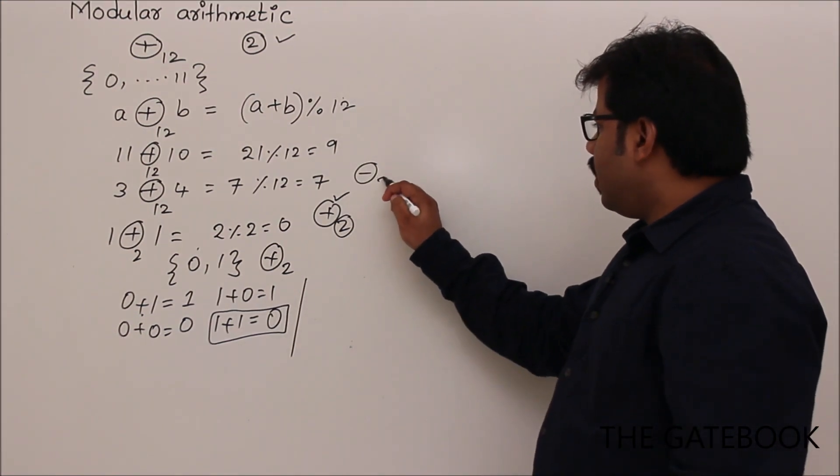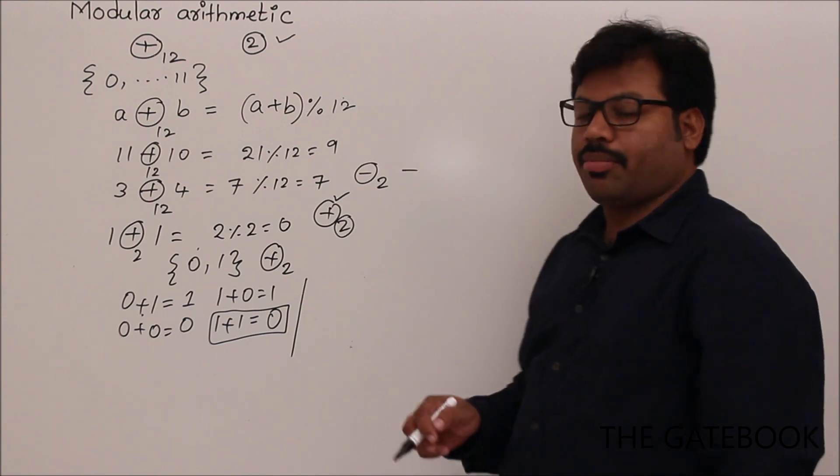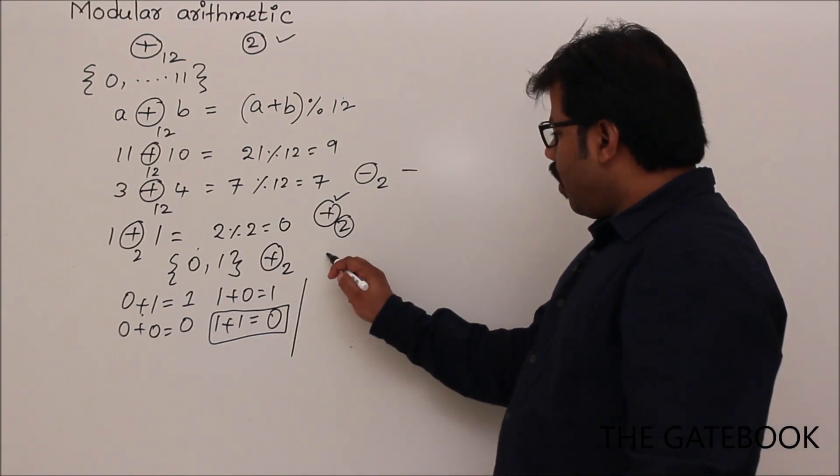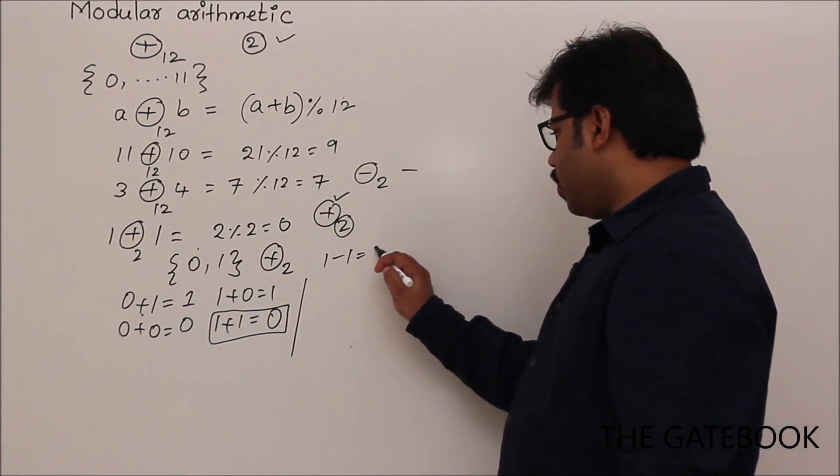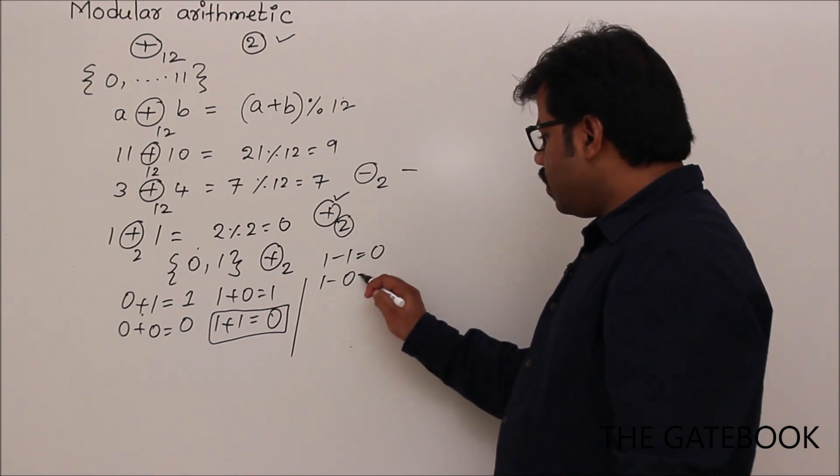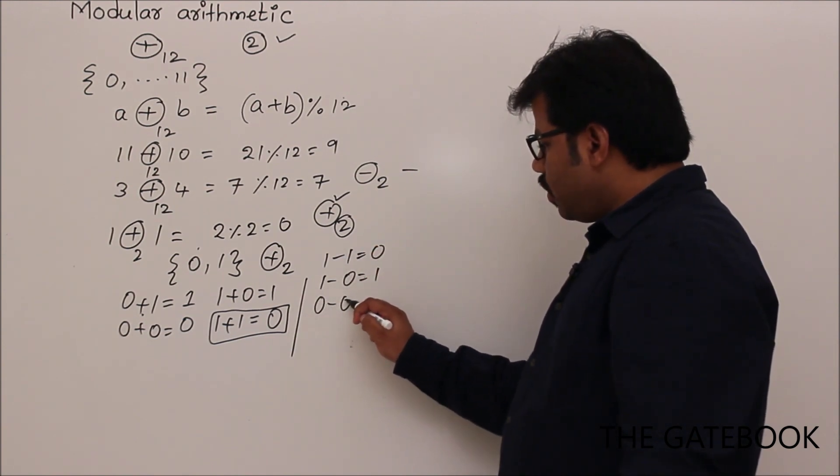So if you have 1 and 1, 1 minus 1 is 0. 1 minus 0 is 1. It's normal subtraction. 0 minus 0, 0.